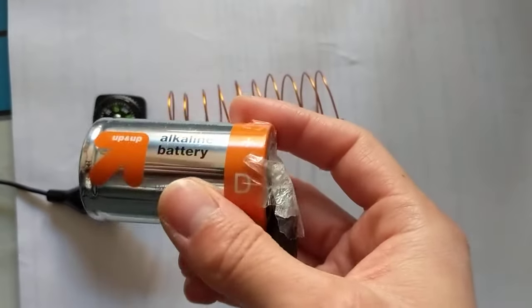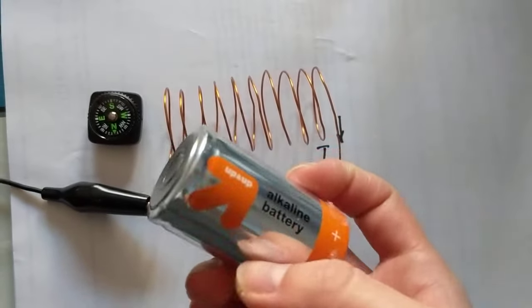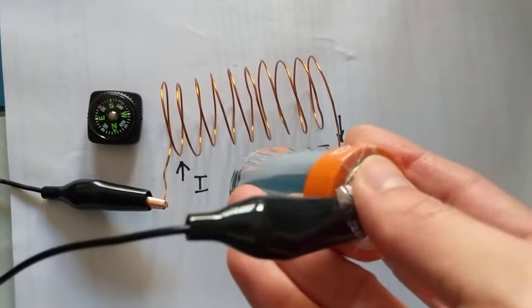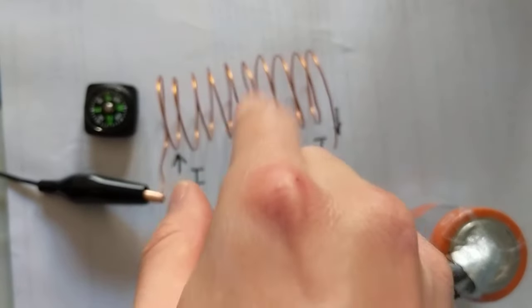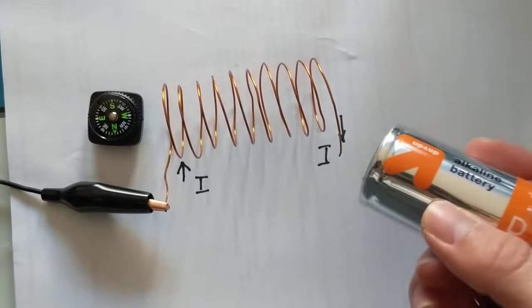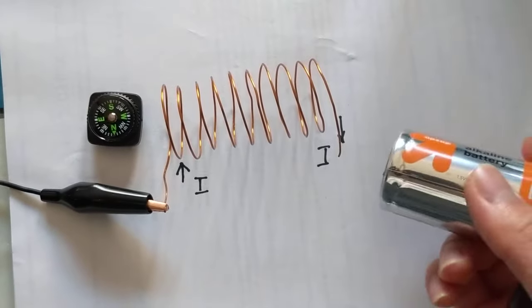So here is our battery. You notice the current is going out this way, through this wire, going into the solenoid like this, goes through all the loops, and then comes out this way, touches the negative end. So it's out of the positive end into the negative end.